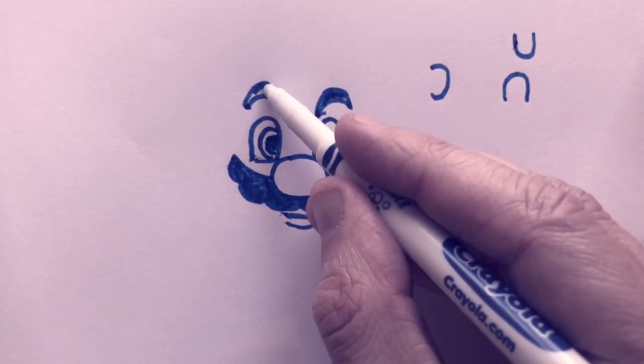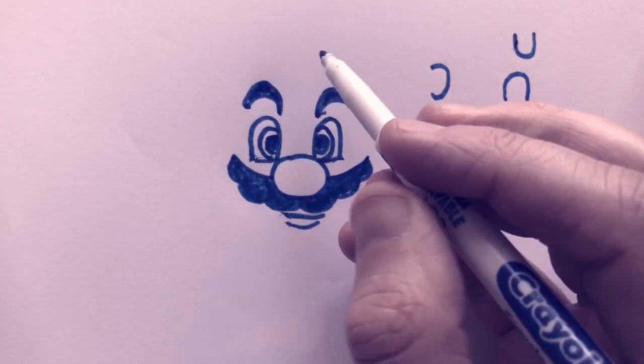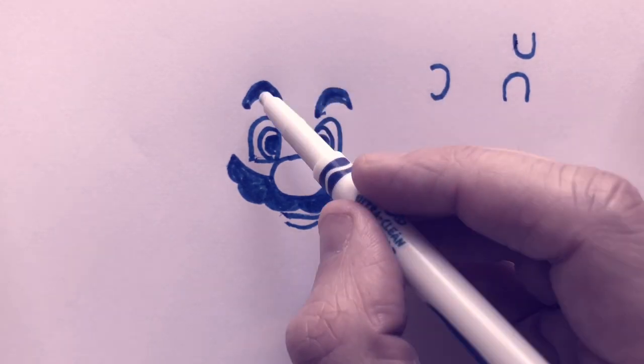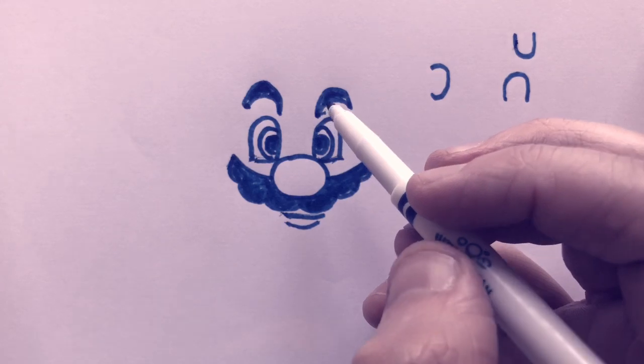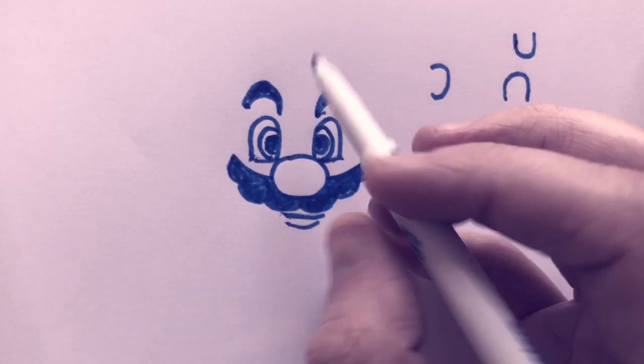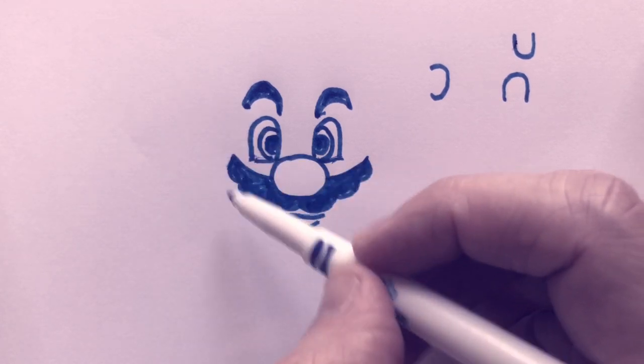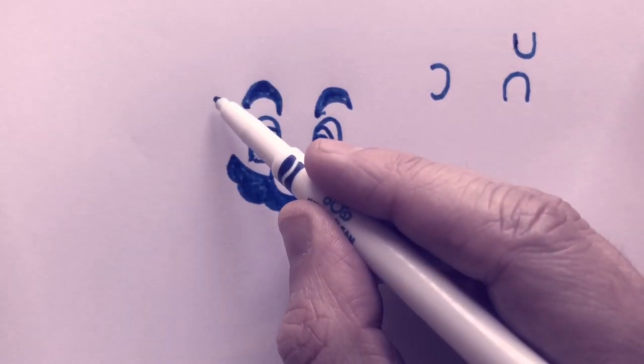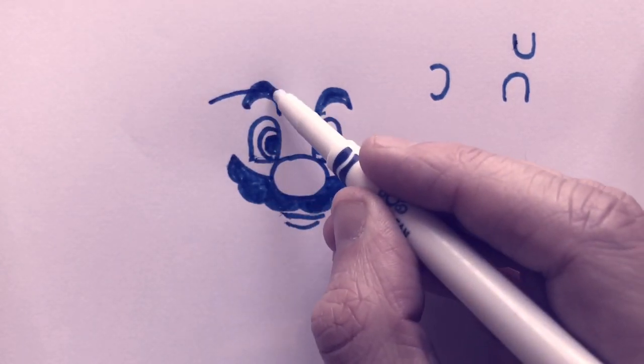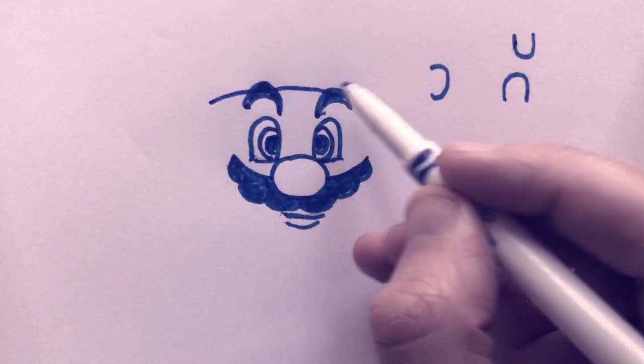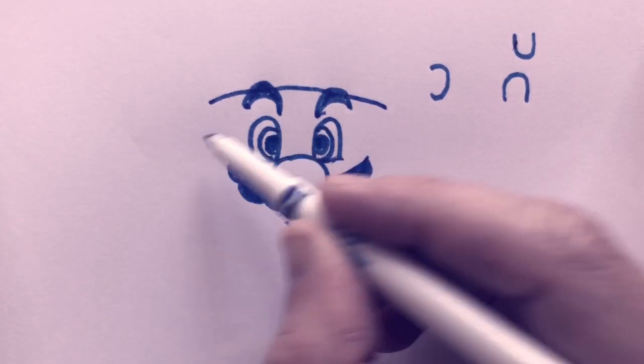These would also be black if you're using colors, but I only have the color blue. Now his hat, if you can believe it, his hat goes behind his eyebrows, which is totally ridiculous. So we're going to start out past where the mustache is.